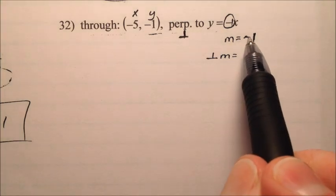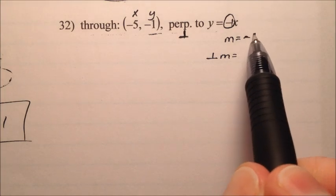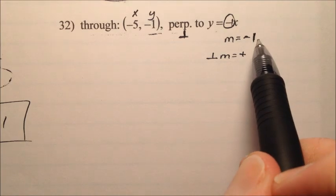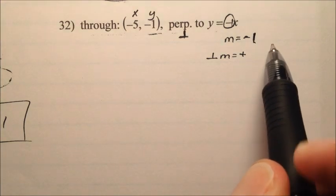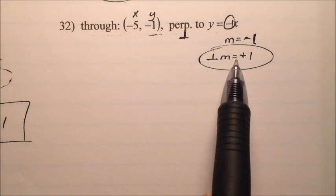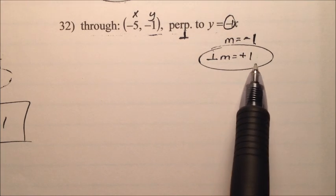So what would the perpendicular slope become? For perpendicular slopes, we change the sign, so instead of being negative, this guy will be positive, and we also reciprocate it, so 1, the reciprocal of 1 is just 1. So we know the perpendicular slope, or the new slope we're going to use, is a positive 1.